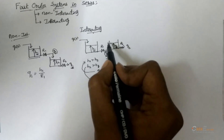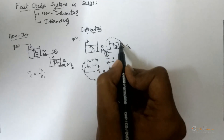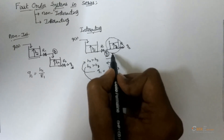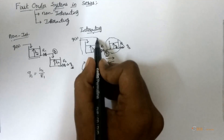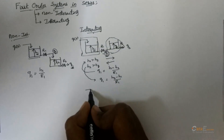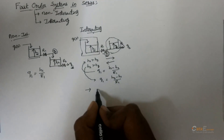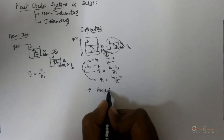In a simple way, if there are any changes in the downstream process, it will affect the upstream process. These type of interacting systems are mainly seen in recycled streams.